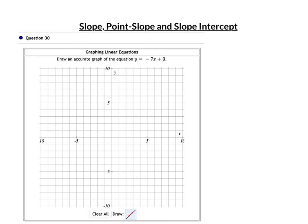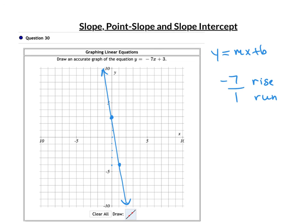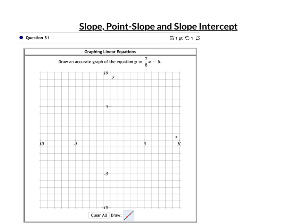Graphing with slope-intercept: for y = −7x + 3, b = 3 so the line passes through 3 on the y-axis. Slope is negative 7 over 1 — go down 7 and over 1. The line goes down and to the right. For y = 7/8 x − 5, the y-intercept is −5 and the slope is 7/8 — rise positive 7 (up) and run positive 8 (to the right).